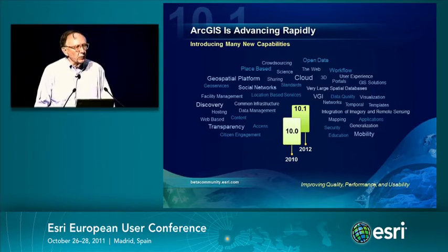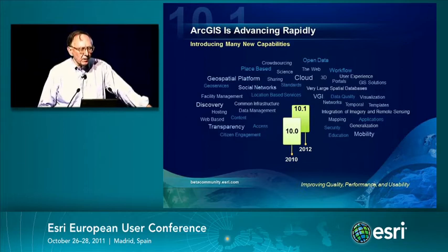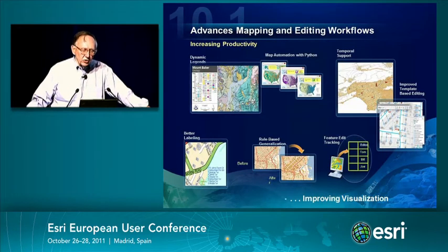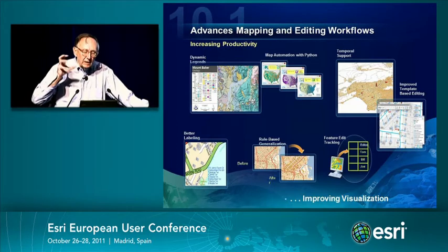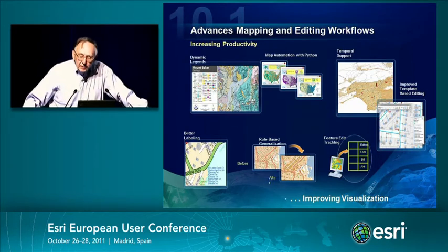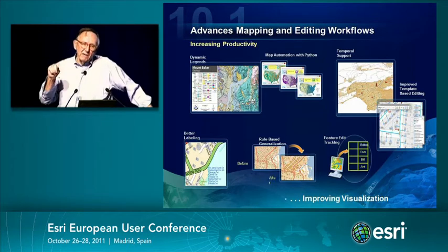My colleagues are going to demonstrate these highlights later today. There are a lot of advances in cartography and editing tools, especially in the area of generalization. We have rule-based generalization. We have dynamic legends, so as you zoom in and out of a map, the legend changes. There's better labeling and more improvements in the templates for editing.